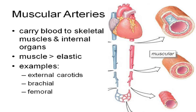The elastic arteries branch to form muscular arteries, where you have more muscle tissue than elastic tissue, so you don't get that recoil. These include your external carotids, brachial, femoral, ulnar, and radial arteries. These are called distributing arteries because they carry blood to specific parts of the body.